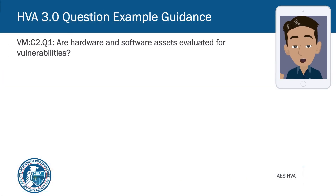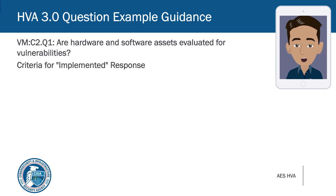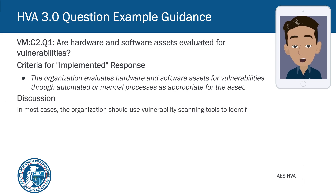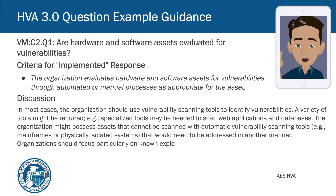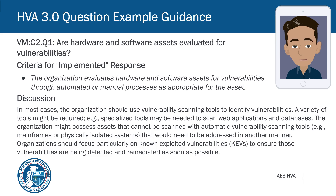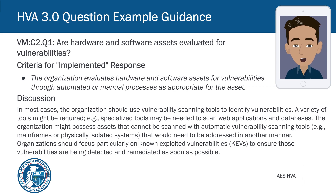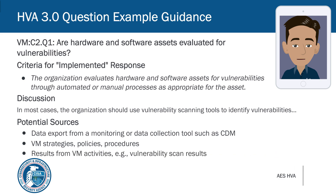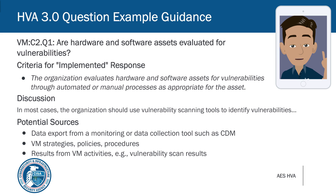Here's an example of the question guidance provided in the assessor guide for each question. Following the question are the criteria for the implemented response — review them to ensure that you determine whether the organization is fulfilling them. Some questions have only a single criterion, and others have two or more. Next is the discussion section, which provides context and background to the material addressed in the question. Although much of this may be familiar to assessors, it can be useful for filling subject matter knowledge gaps or explaining terminology to an organization SME. Finally, we have potential sources — documents, data exports, or any other place where you may find the answer to the question — helpful for reviewing documents the organization provides or guiding them on where to look.